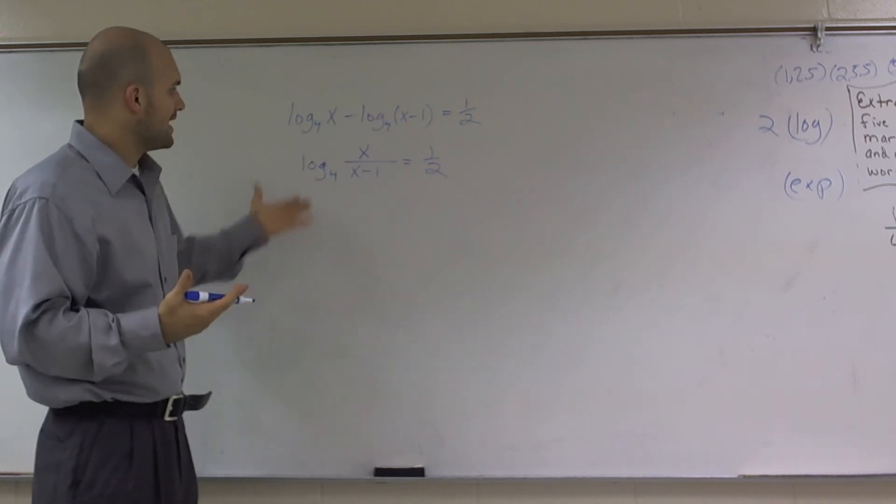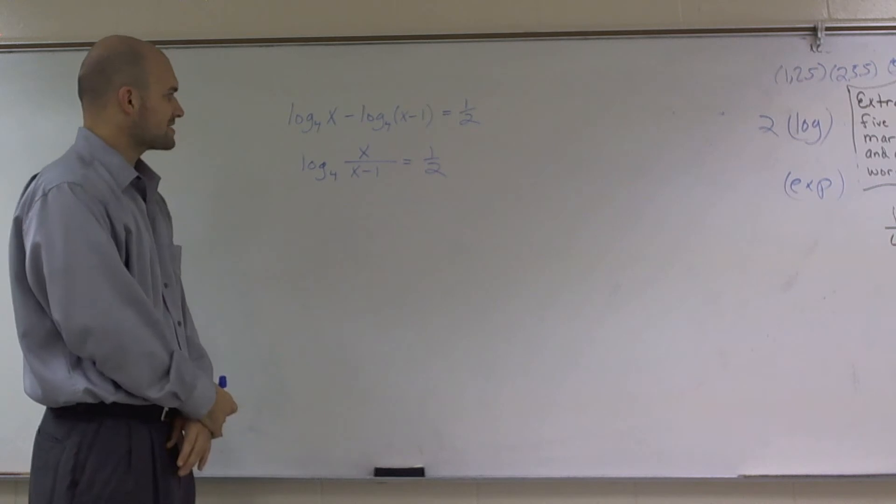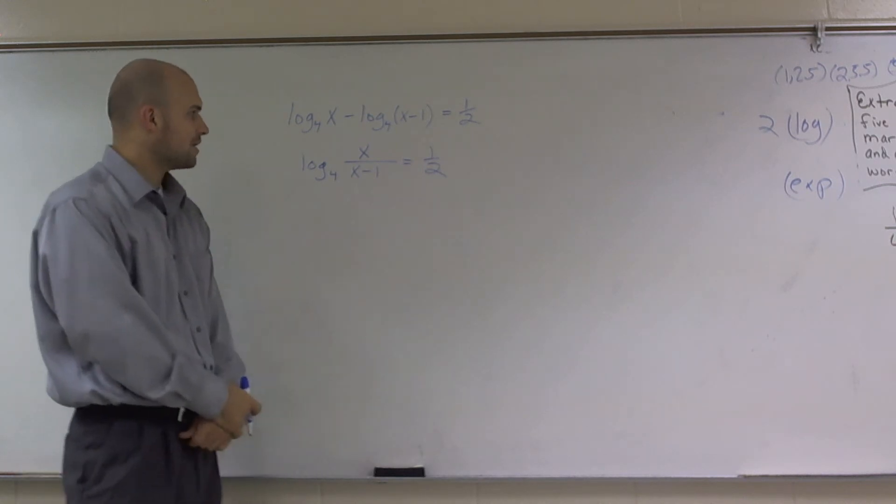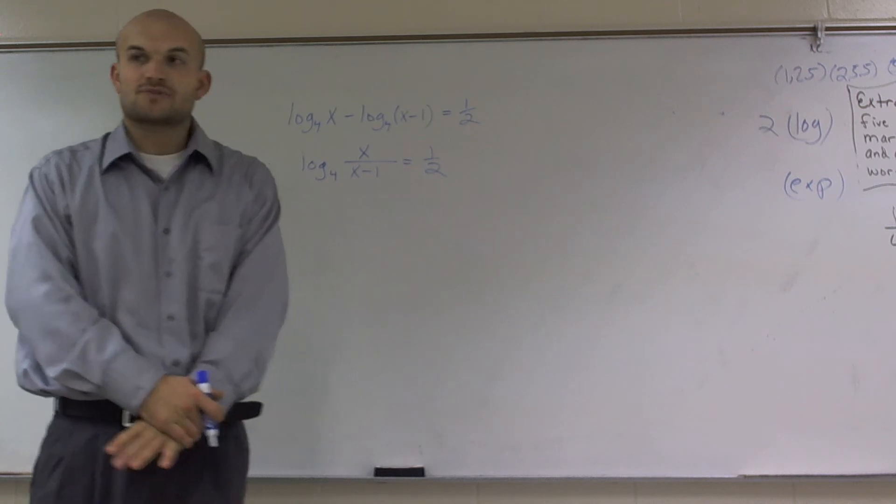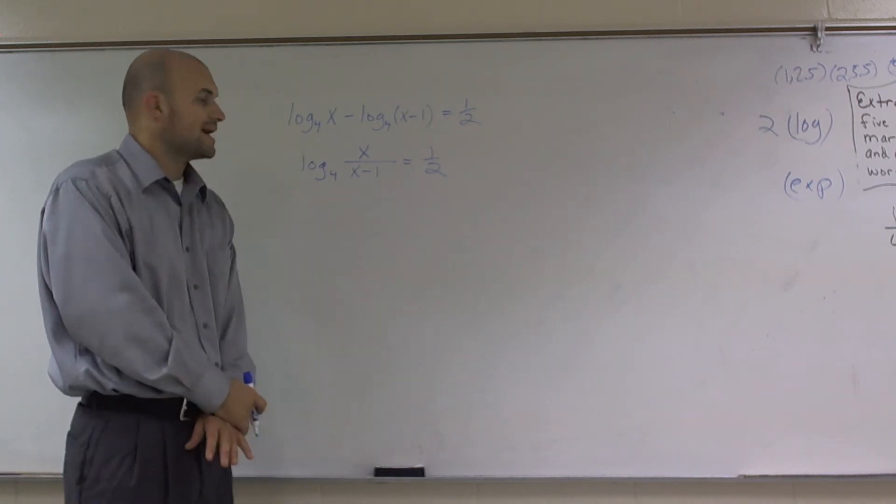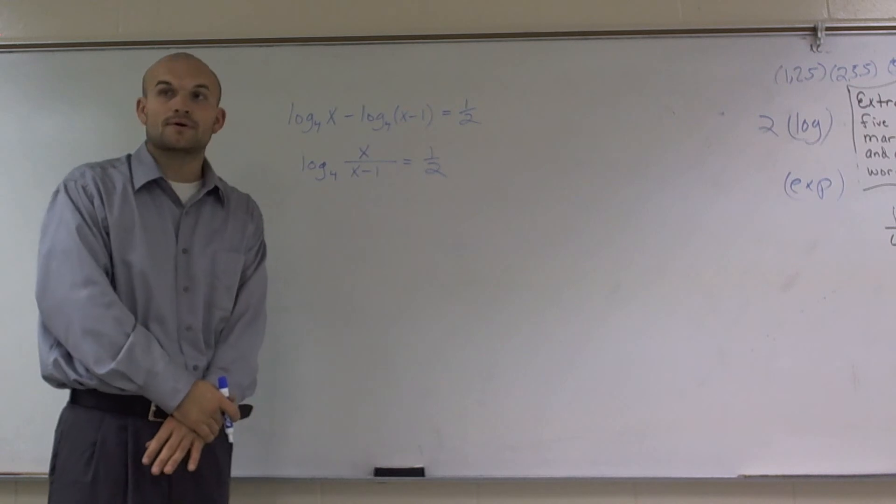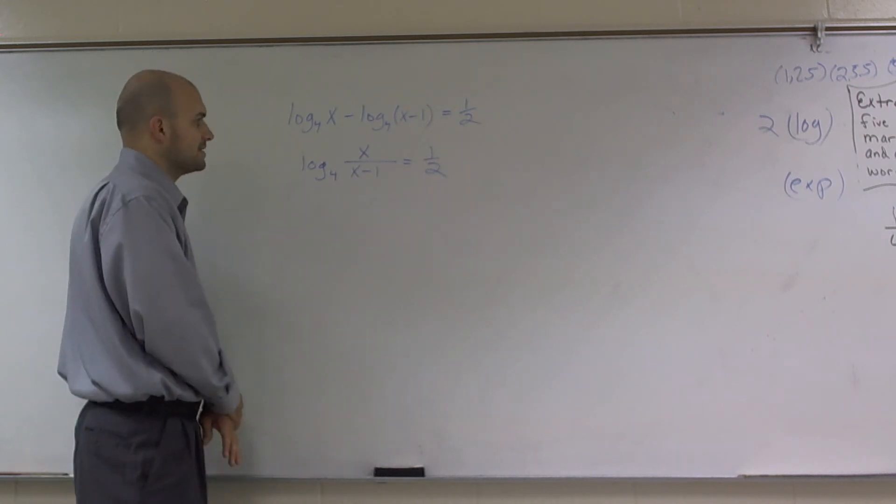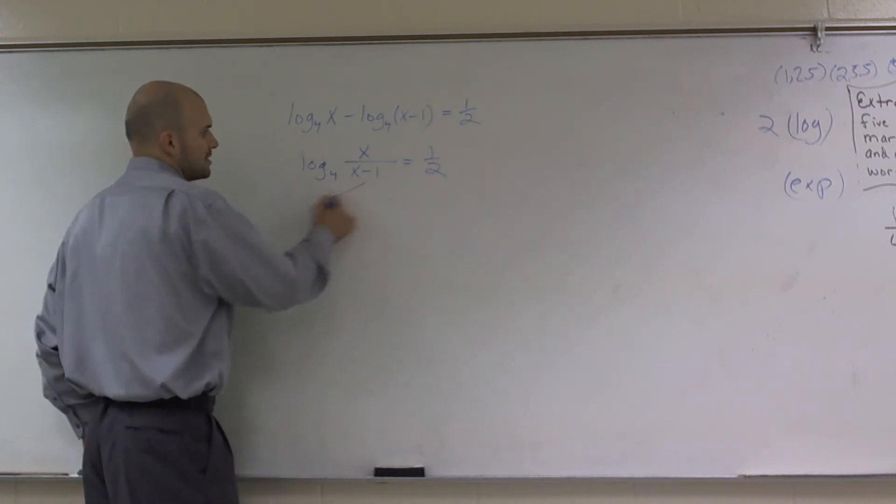Then from here, I have log base 4 of x divided by x minus 1 equals 1/2. So there's a couple of things I could do here. One, I could transfer it to logarithmic form. Or the other one is I could exponentiate each side of 4. So what I could do here is there's kind of two different ways I could solve this.